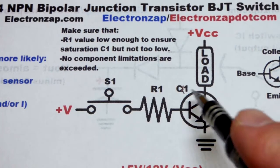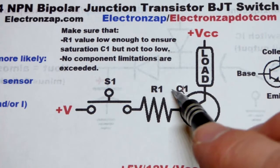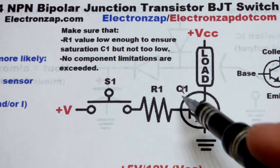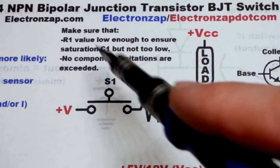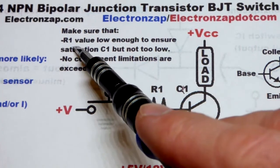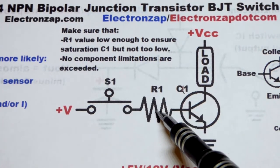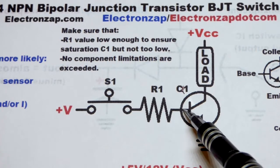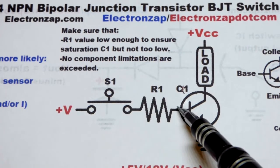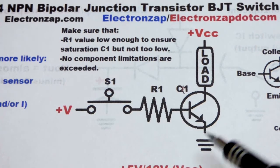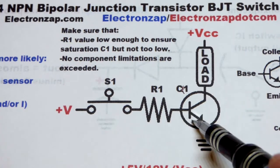Zooming in, I made a little mistake. I wrote C1 when I should have wrote Q1, so I fixed that with a pen. Also, we have notes here to make sure that this resistor, the base resistor, is low enough value to ensure saturation. We'll get to that coming up.